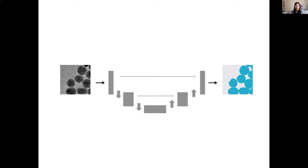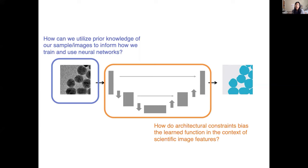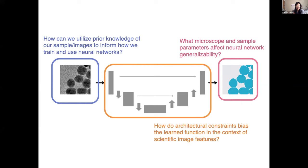As a starting point, I'm focusing today on the task of identifying nanoparticles in TEM images. Some questions we've been asking: How can we utilize prior knowledge of our sample, our microscope, and our images to inform how we train and use neural networks? How do you decide on architecture? How do the constraints we put on the architecture bias the function we learn in the context of our scientific image features? And how do microscope and sample parameters affect how often I can use my neural network and how much it can generalize from one experiment to another? I'm going to focus specifically on how architecture can influence performance.